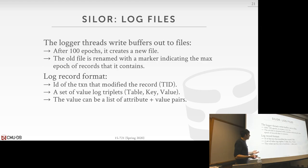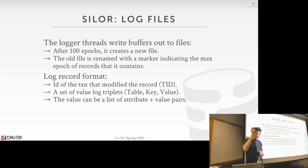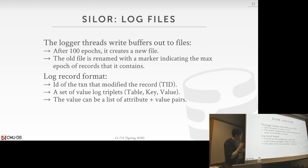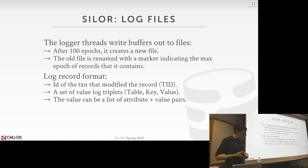The epoch mechanism solves the coordination problem. Every so often the epoch increments, forcing every logger thread to write out the current contents of its log buffer. We record the epoch at which everyone wrote, and any transaction that committed and was flushed to disk prior to that epoch is durable — we can tell the outside world it committed. The epoch is also used elsewhere to minimize coordination across different CPU sockets.